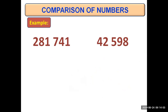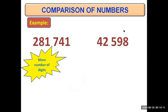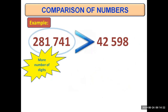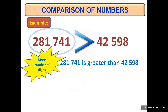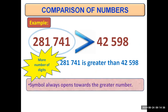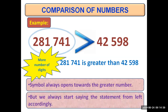Another example: we have 281741, which is a six digit number, and 42598, which is a five digit number. The first number has greater number of digits, so this number will definitely be bigger. The symbol opens its mouth towards the number at left, and we say that 281741 is greater than 42598. The symbol always opens towards the greater number, but we start saying the statement from left.